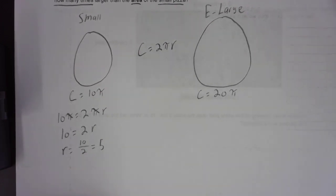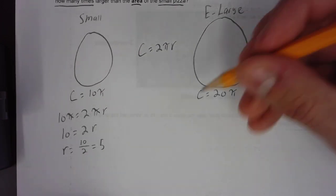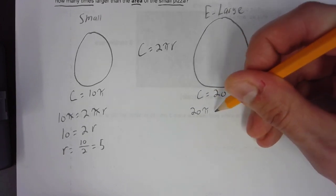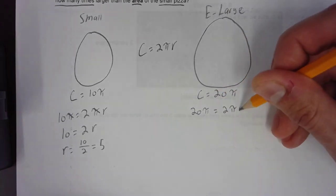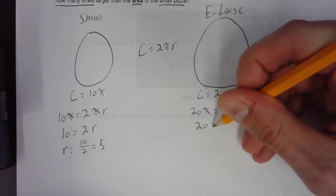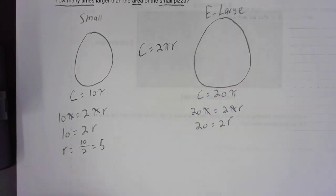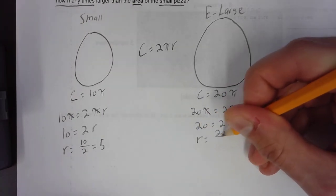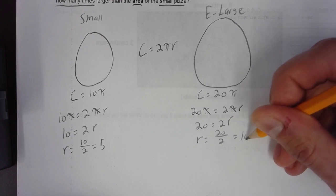Now we're going to repeat the steps for the other side. So, we have 20π equals 2πr. Cross out the π's. 20 equals 2r. So, now we have r equals 20 over 2, which equals 10.